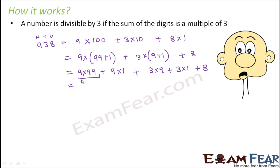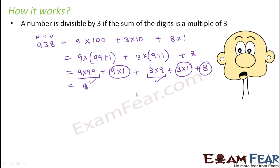Now, 9 × 99 is divisible by 3, and 3 × 9 is also divisible by 3. So those terms are handled. What is left out is: 9 × 1, 3 × 1, and 8 — which is basically 9 + 3 + 8, nothing but the sum of the digits.